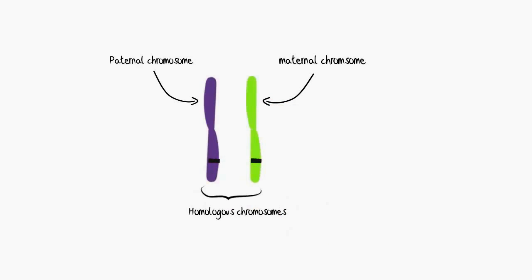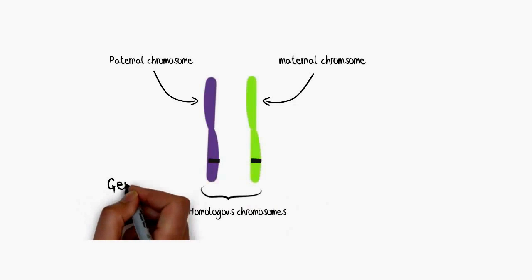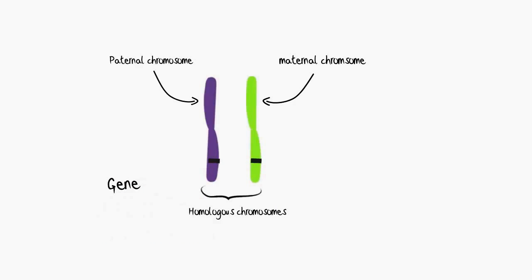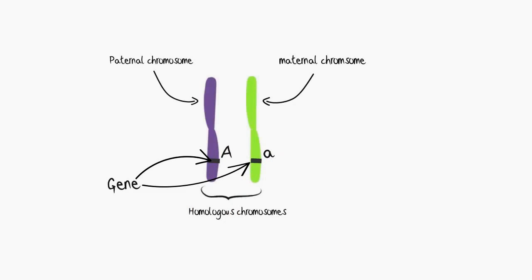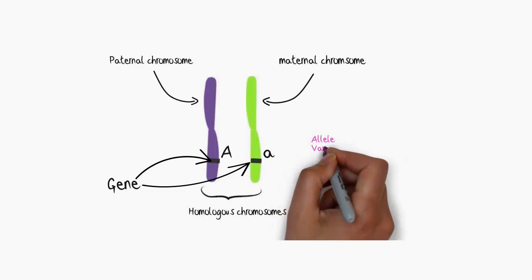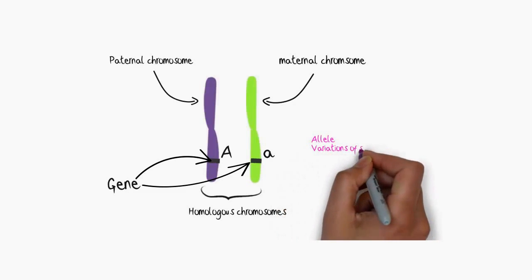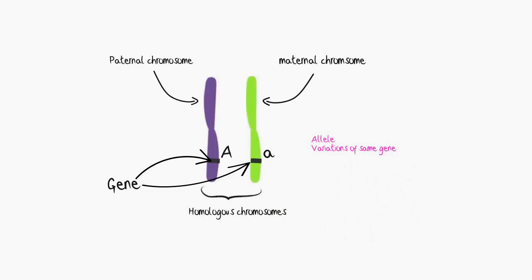That same gene in the same location, or loci, is being illustrated there. Those genes, although being the same, can have different variations — and that's what we term an allele. We can see capital A and little a representing two alleles, a dominant and recessive allele. Of course it doesn't have to be different alleles; they can both be the same.